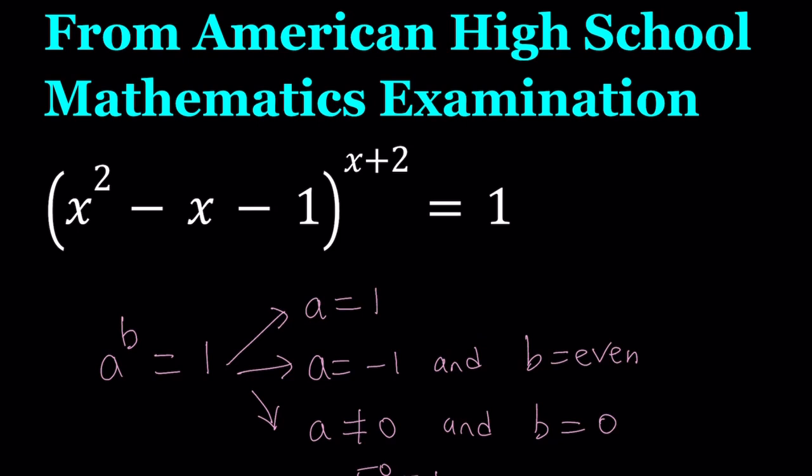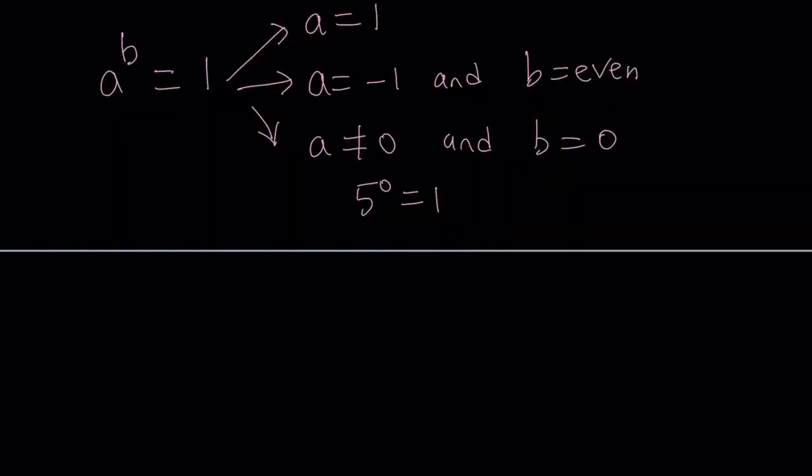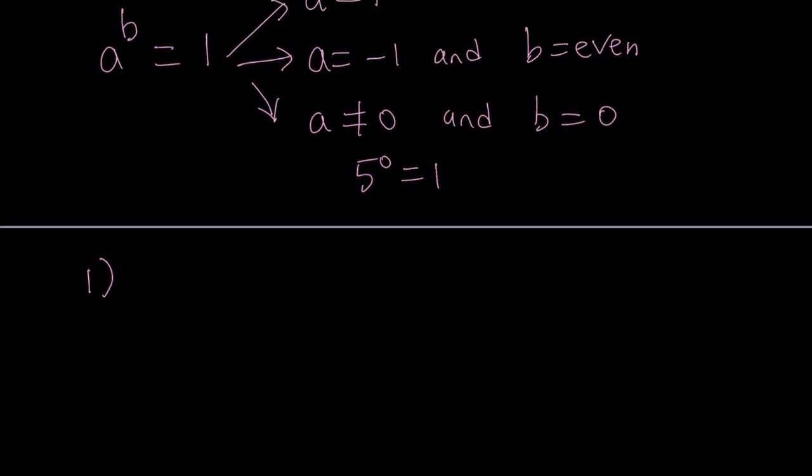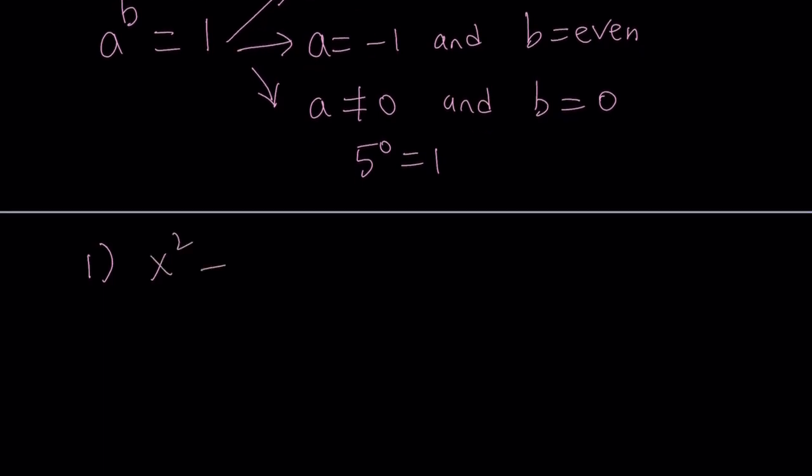I'm going to number the cases 1, 2, and 3. Obviously, there's another way to approach this problem, which I'm also going to show. First case, we have x squared minus x minus 1 being equal to 1. So x squared minus x minus 1, which is the base, set it equal to 1. What do you get from here?